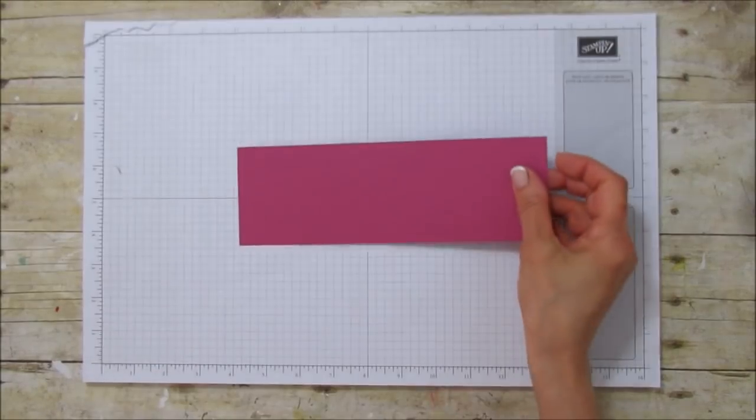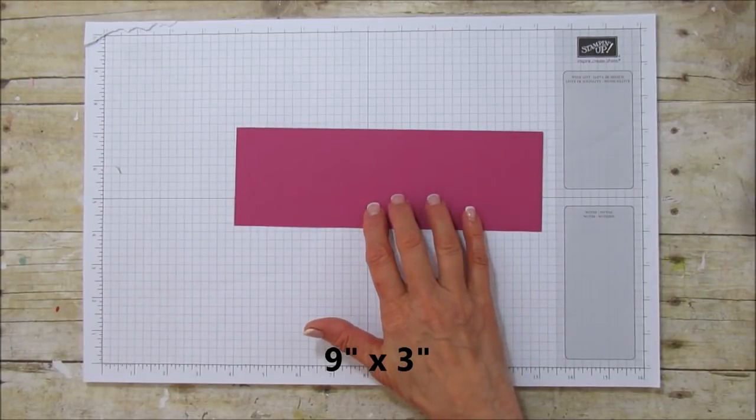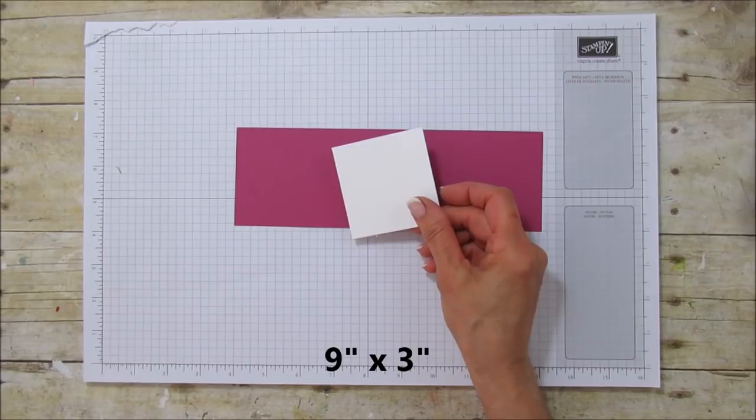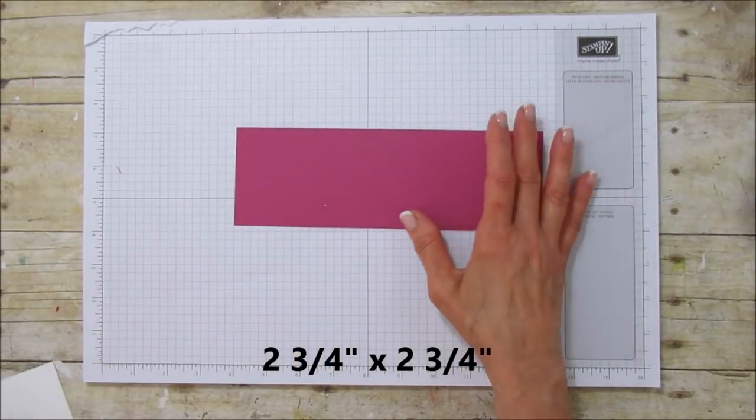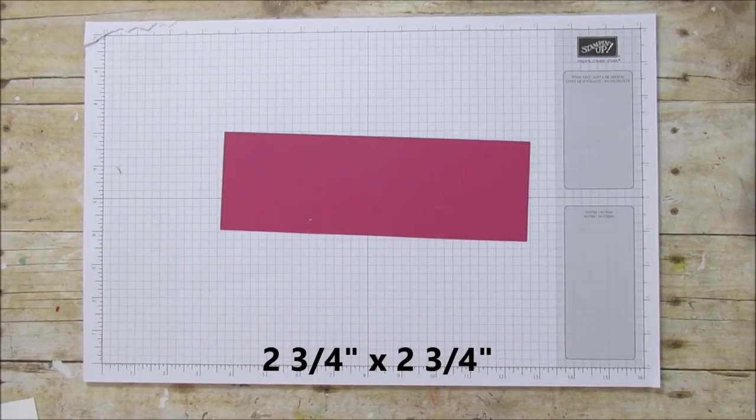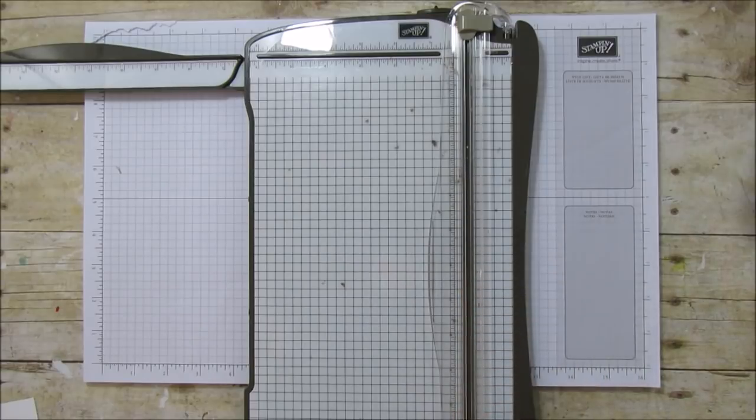All right so you're going to need a piece that is nine by three inches and this is the berry burst, and then you're going to need a piece of whisper white that is two and three quarters by two and three quarters. So let's go ahead and score this. These go super quick and easy so they're great for party favors.